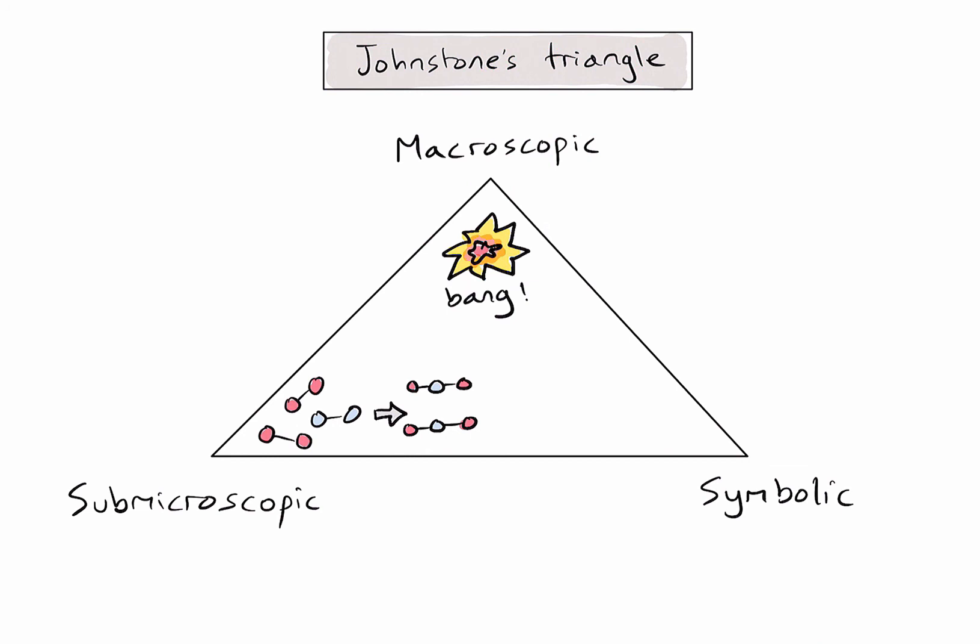Thirdly, at the symbolic level, I need to consider how I am representing this process. In this example, we might represent it using a chemical equation. As you work through the IB Chemistry course, it's useful to consider at which level you are thinking about a concept, and for conceptual understanding, you might want to try and link it to the other levels seen in this triangle. Hopefully this video was of some help.